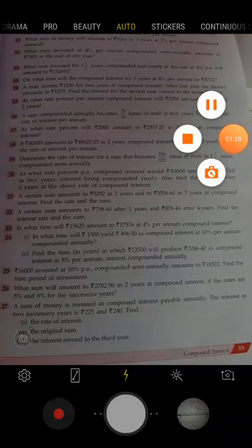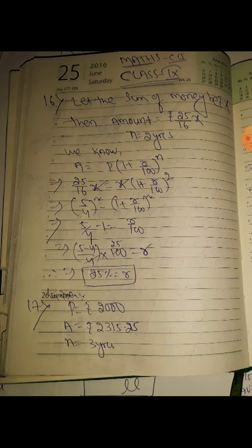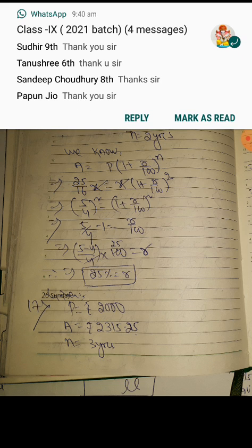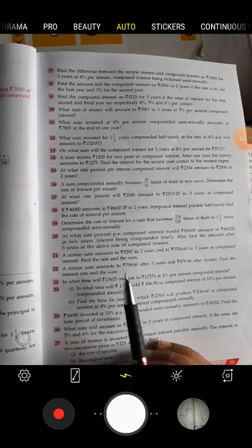So here is its answer. Sum of money is x, amount 25/16 x, n equals two years. We know that amount equals P of (1 + R/100) to the power n. So 25/16 x equals x of (1 + R/100) to the power 2. That is 5/4 to the power 2. You have to compare, right side has square, left side also should have square. So 5/4 equals 1 + R/100. 5/4 minus 1 equals R/100. Take the LCM: (5-4)/4 equals R/100. 1/4 into 100, so 25% is the rate of interest.